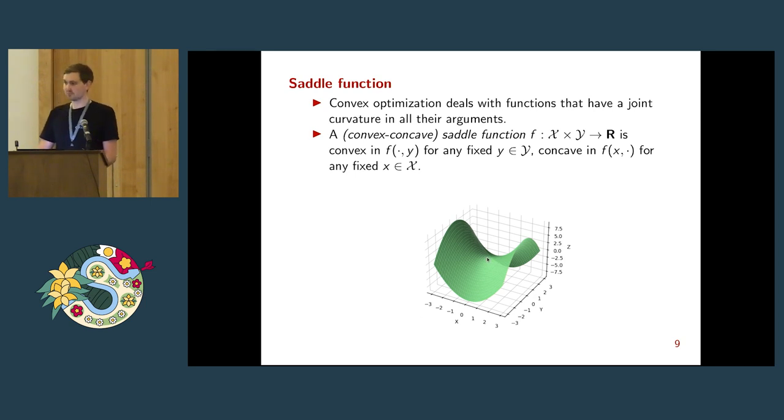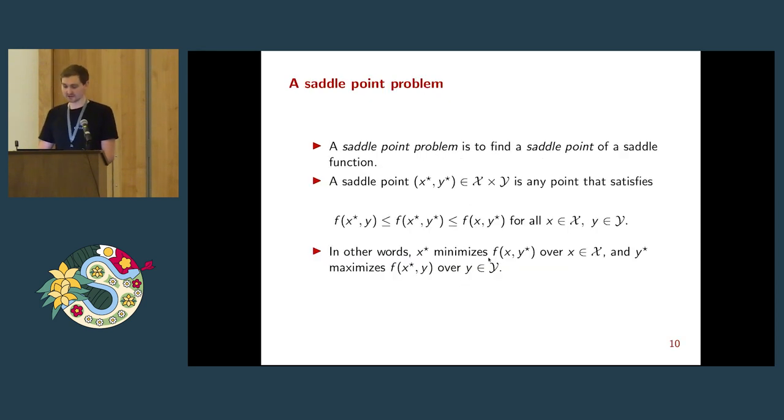You can probably imagine that the point we care about is this one here, a prototypical saddle point. A formal definition of a saddle point is given here. It's a point x star, y star, such that if I choose any other x, then my objective function will become bigger. Likewise, if I choose any other y than y star, my objective function will be smaller.